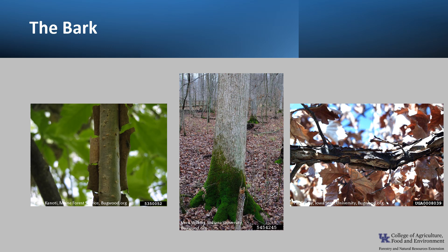The bark is gray and scaly. As the tree ages, the bark develops irregular fissures and ridges. A distinctive feature of Swamp White Oak is the peeling bark along the branches.